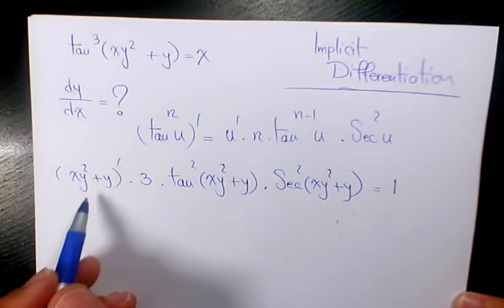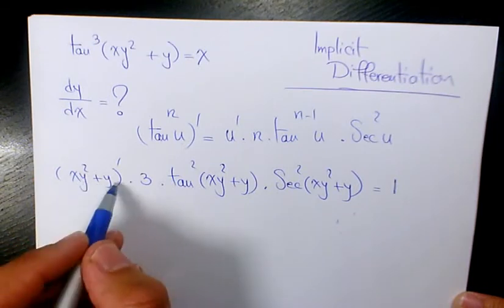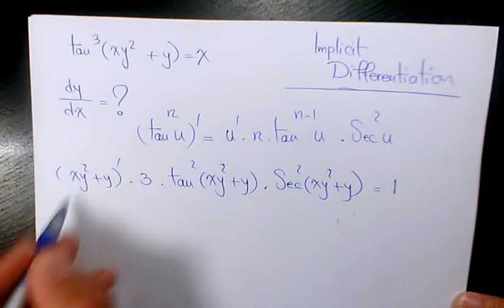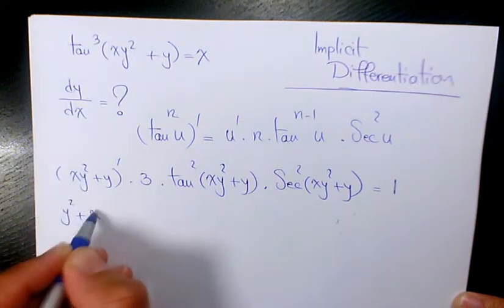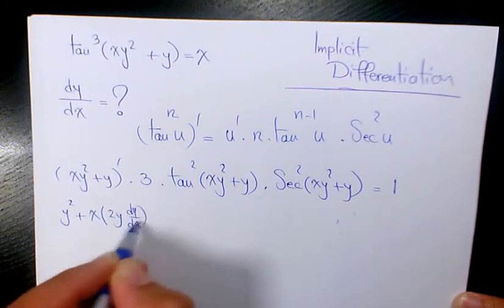Now the derivative here is going to be, we have the product rule here. The derivative of x is 1 times y² plus x times 2y dy/dx.